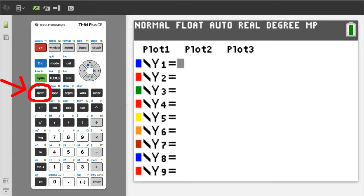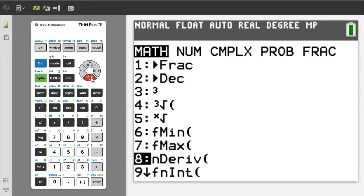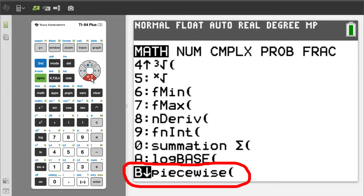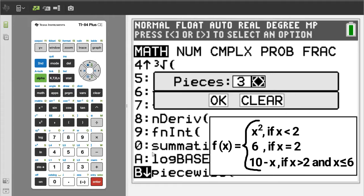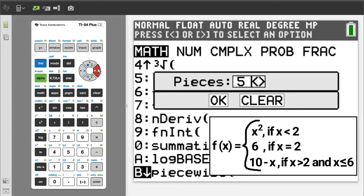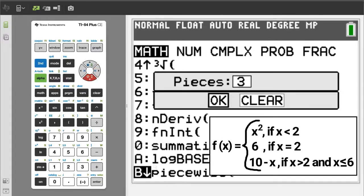We will use y1. Press the math button. Scroll down to here. Piecewise. Highlight it and press the enter button. Here we can select how many pieces is in our piecewise function. You can choose between 1 to 5 by using the right or left arrow button. We have three pieces, so I will choose three. Arrow down to OK and press enter.